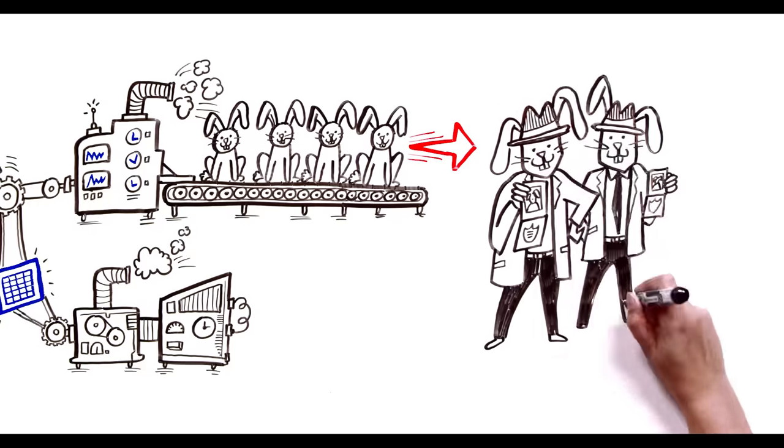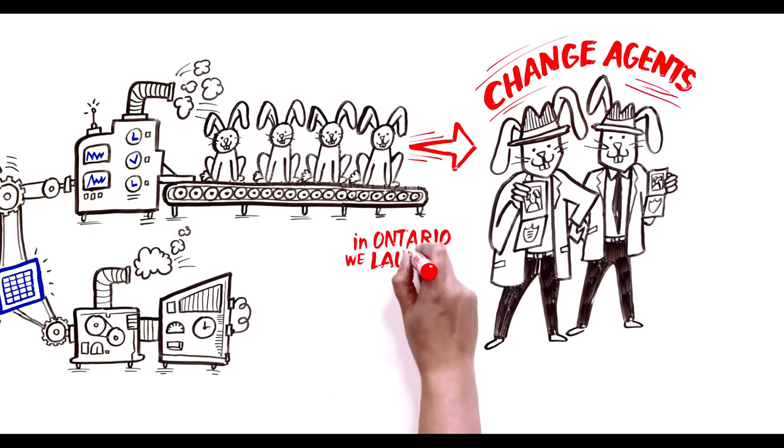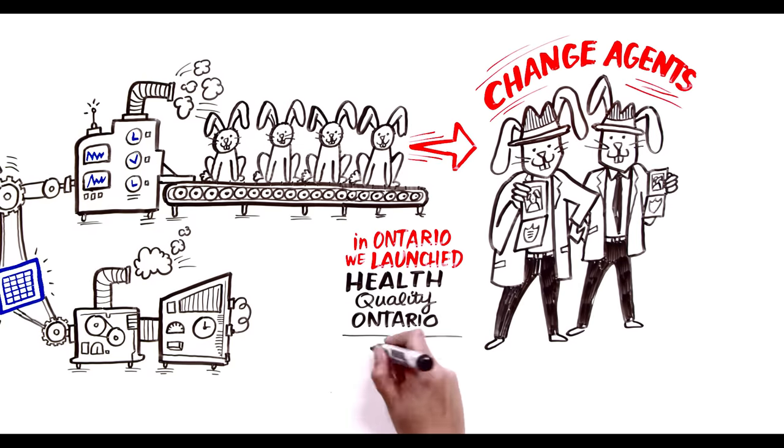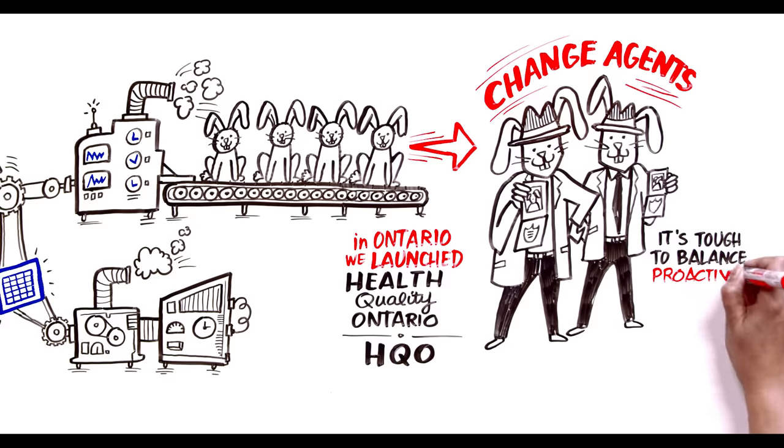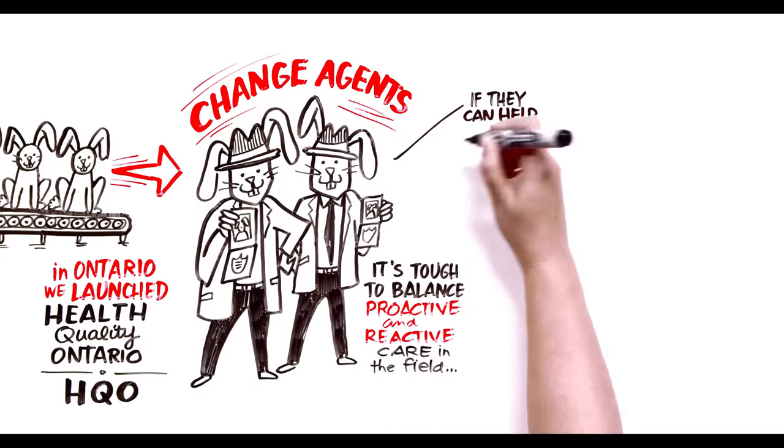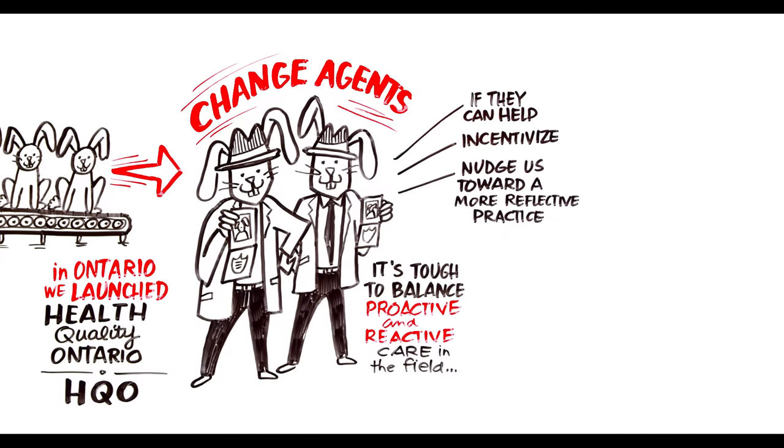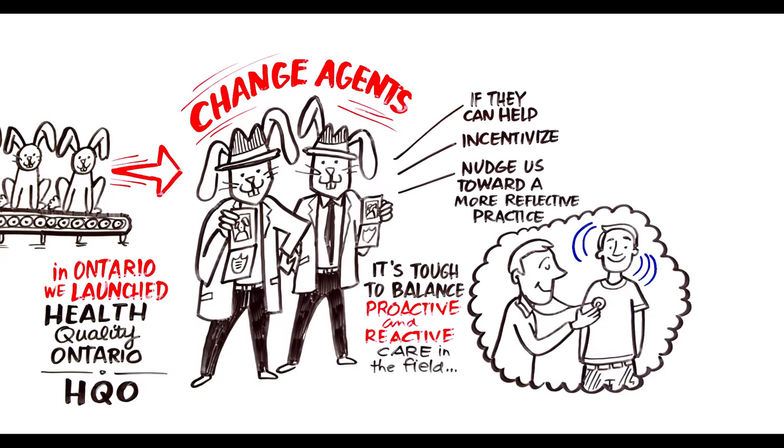Changing the system requires change agents, and in my province we launched Health Quality Ontario. HQO and organizations like it recognize that it's tough to balance proactive and reactive care in the field. But if they can help or incentivize or nudge us towards a more reflective practice and improve outcomes, we can actually create a better user experience for us all.